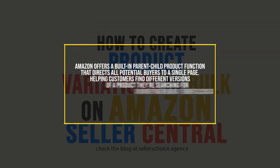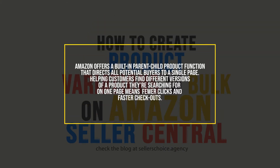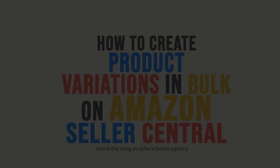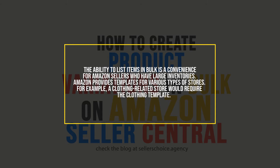Amazon offers a built-in parent-child product function that directs all potential buyers to a single page. Helping customers find different versions of a product they're searching for on one page means fewer clicks and faster checkouts. The ability to list items in bulk is a convenience for Amazon sellers who have large inventories.